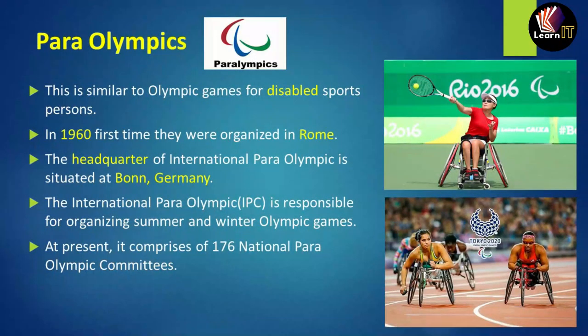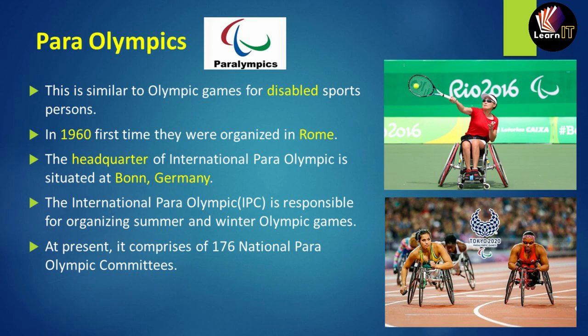Now moving on to the Paralympics. The logo is similar to the Olympics. It is the Olympic games for disabled sportspersons. It was first started and organized in 1960 in Rome. Its headquarters is situated at Bonn, Germany. The International Paralympic Committee, IPC, is responsible for organizing all the summer and winter Paralympic games. At present, there are 176 national Paralympic committees participating.